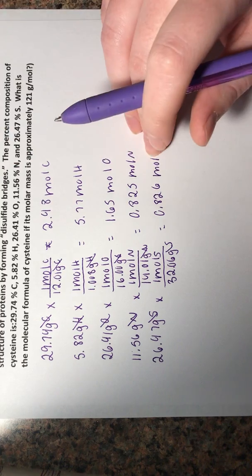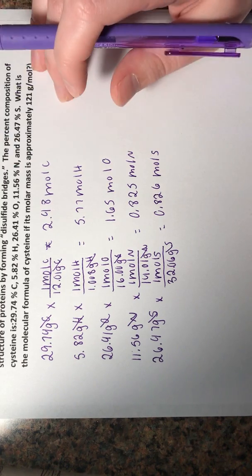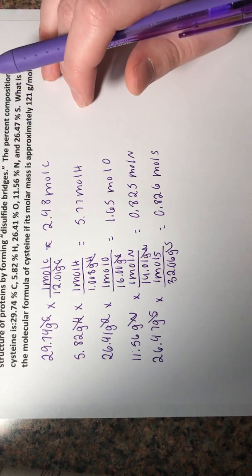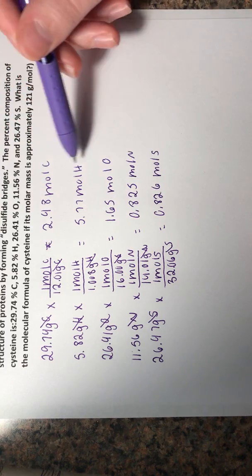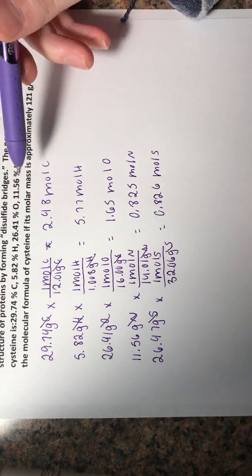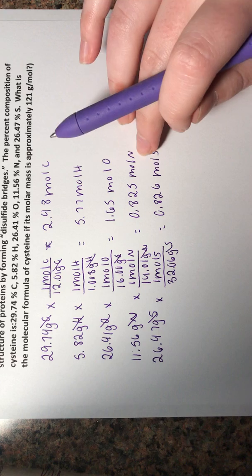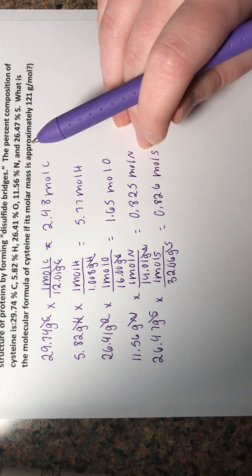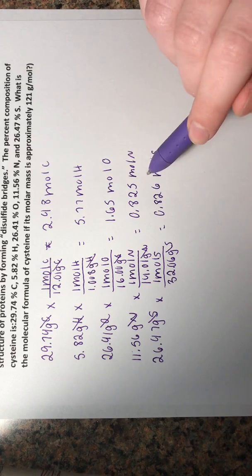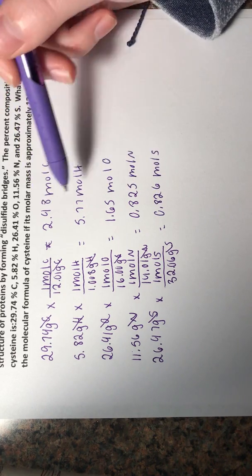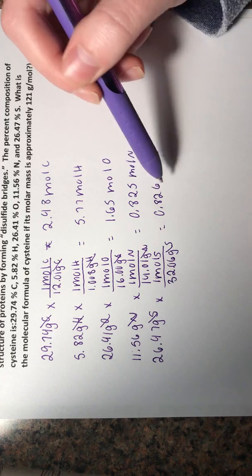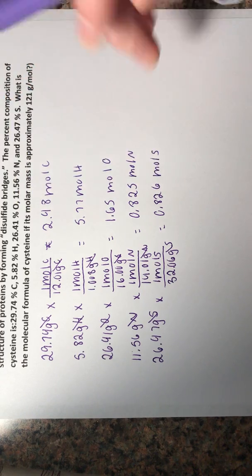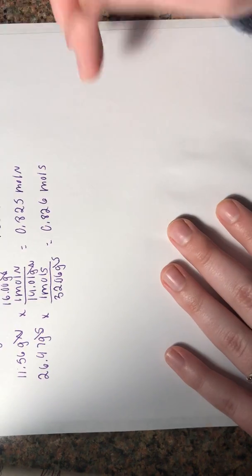With our procedures, we've already converted the percent to mass, the mass to a mole. So now we have to find the smallest mole, the smallest amount. So that looks to be this mole of nitrogen right here. So what we're going to do now is take 0.825 and divide it by each of these moles.